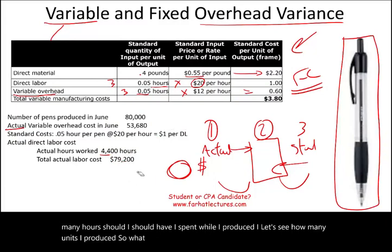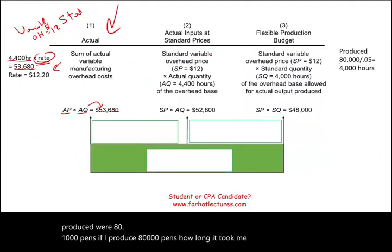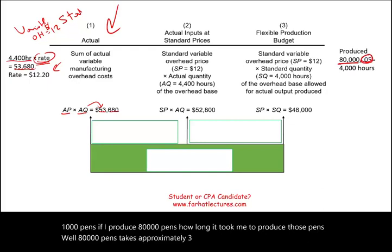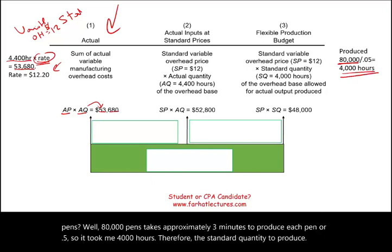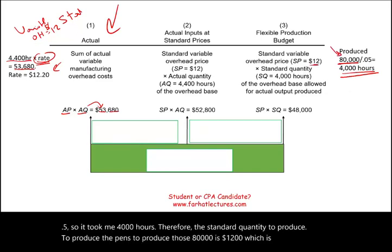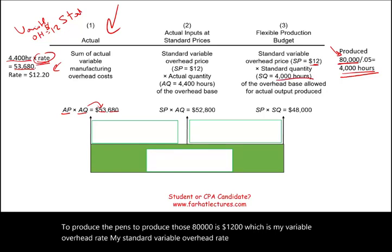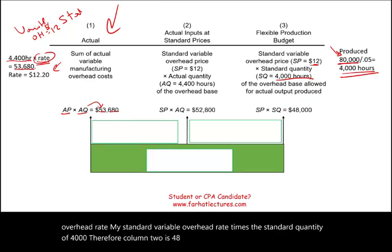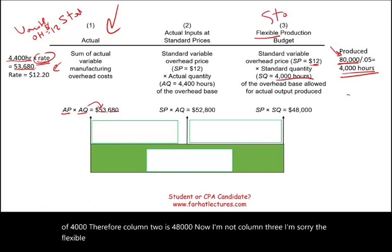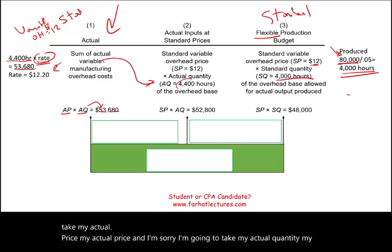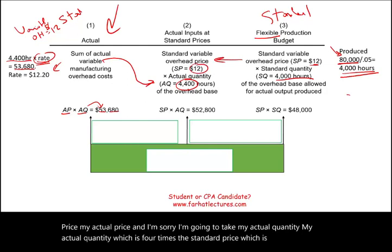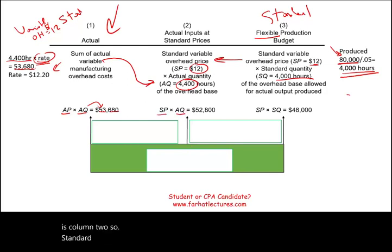We produced 80,000 pens. At 0.05 hours per pen — approximately three minutes each — it should have taken us 4,000 hours. Therefore, the standard column is $12 (standard variable overhead rate) times 4,000 hours, which equals $48,000. For column two (the middle column), we take the actual quantity of 4,400 hours times the standard price of $12, giving us $52,800.